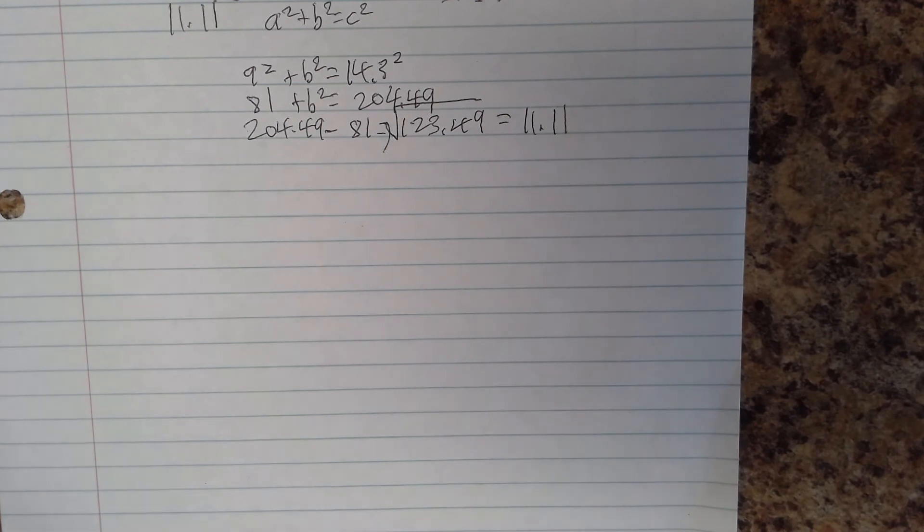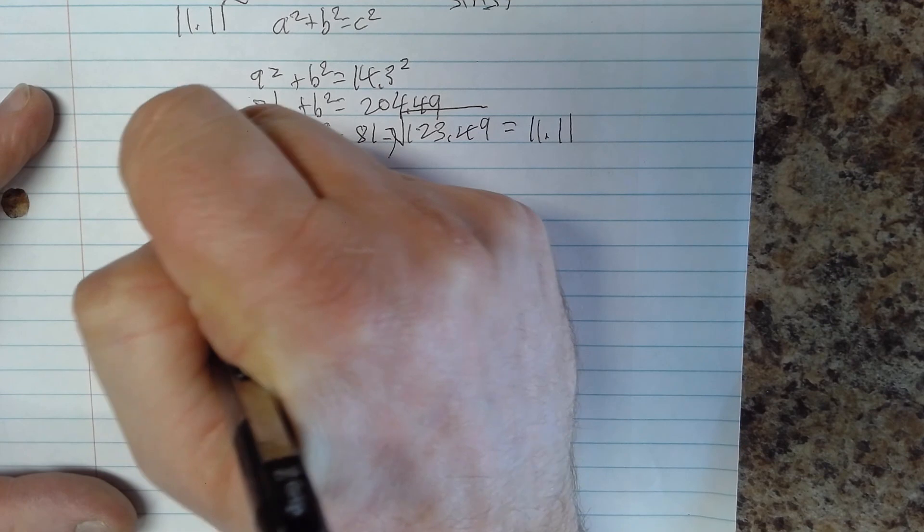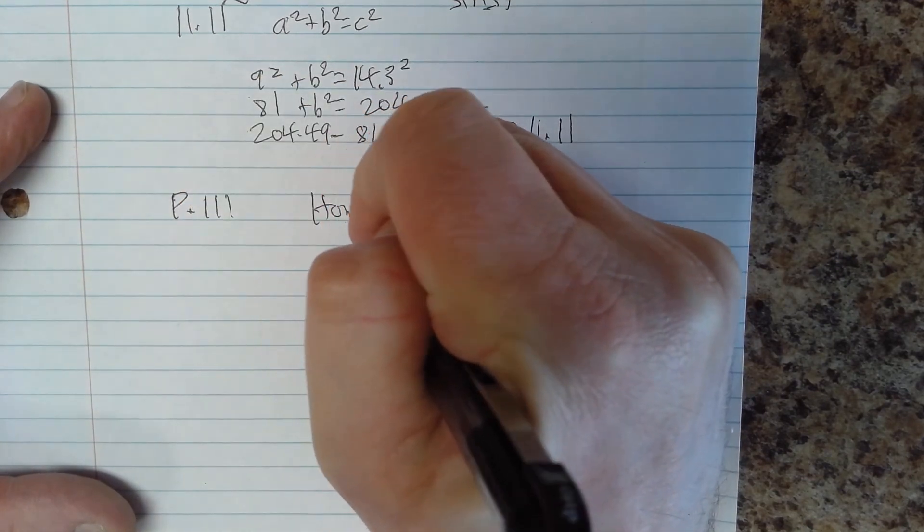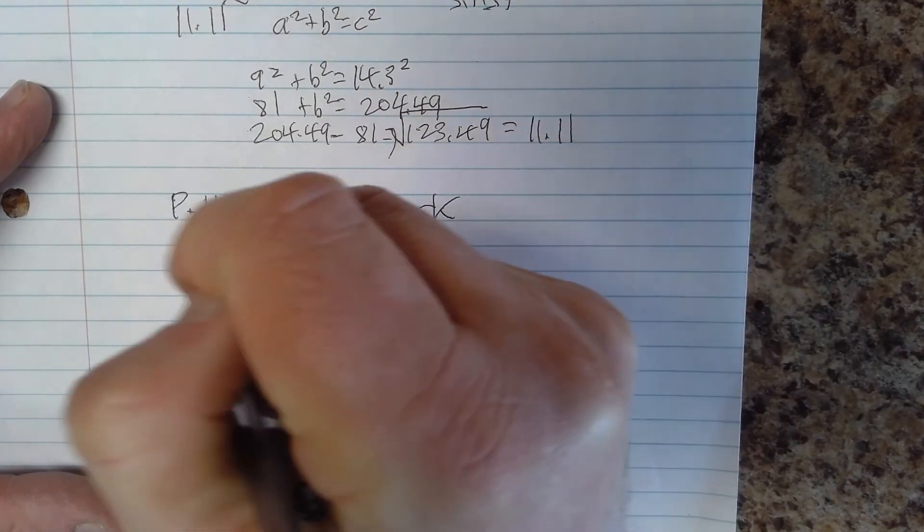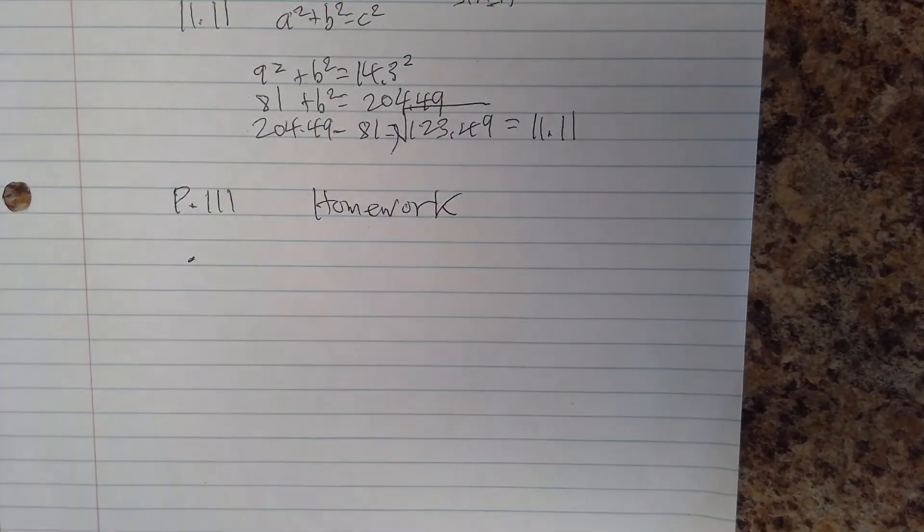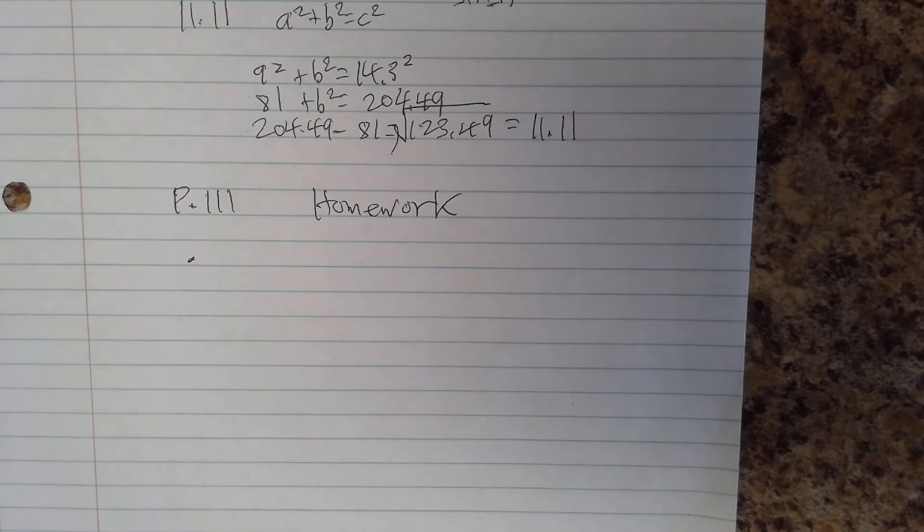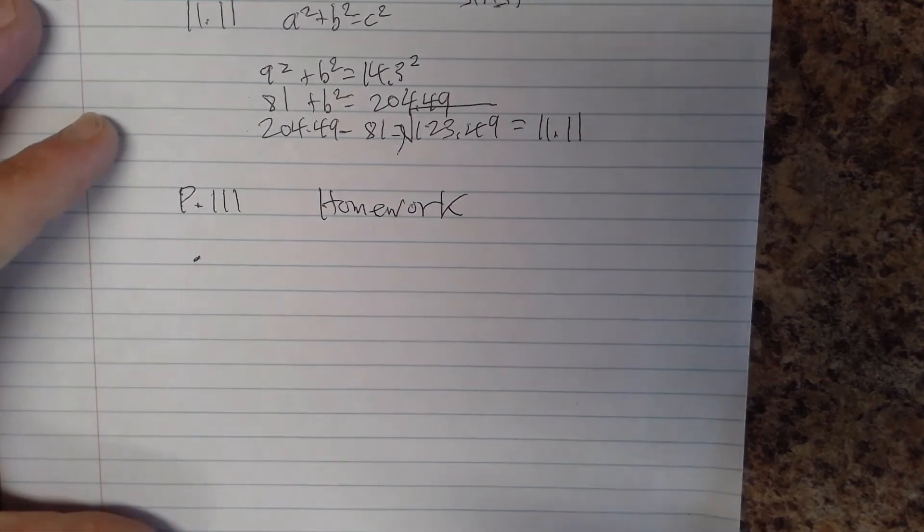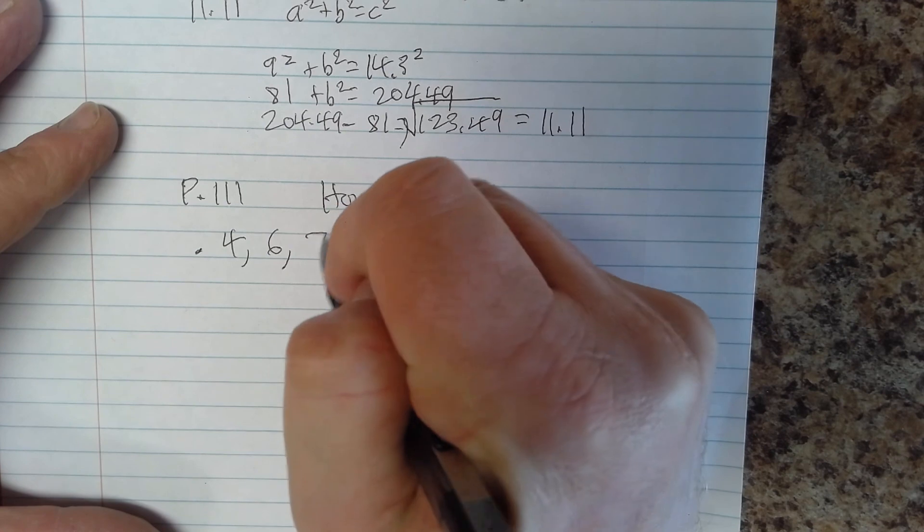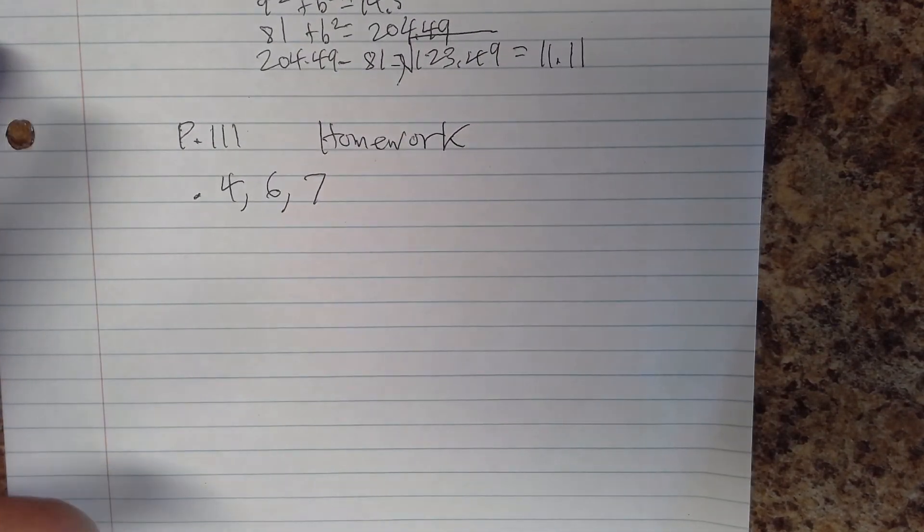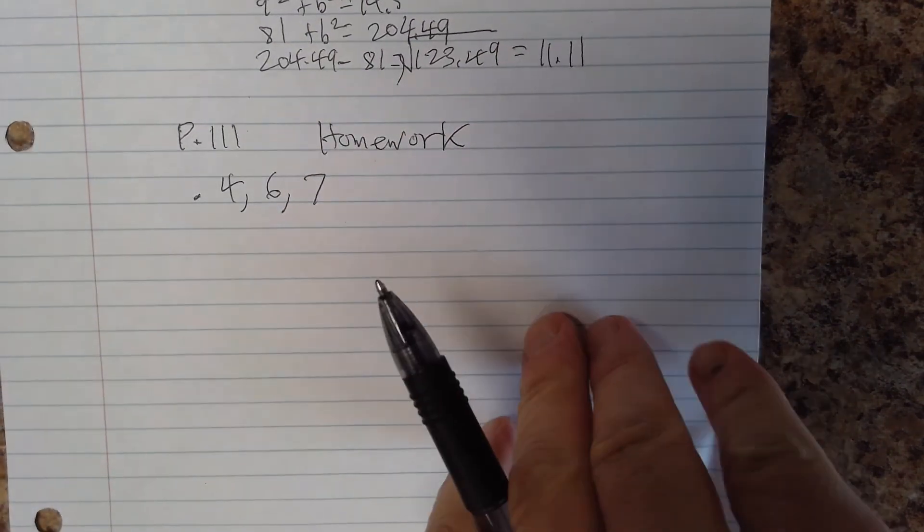Our problems are all going to come from page 111. So page 111, homework. So you have the review for this week plus you have the exercises on page 111. We're going to do 4, 6, and 7. That's your homework.